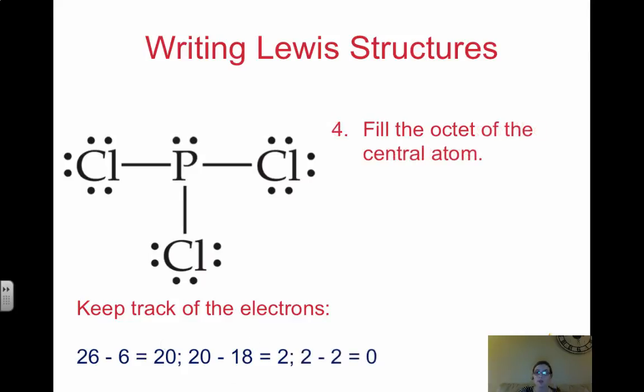So then what we want to do is fill the octet of the central. So just do another quick check. 8 on each chlorine. This phosphorus, remember these two that are in the bond go to both atoms. So the phosphorus now has 2, 4, 6, 8. So phosphorus is also full in terms of the octet.